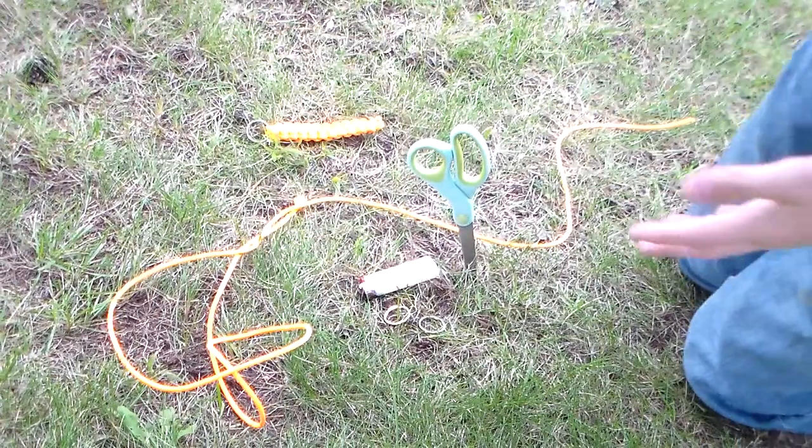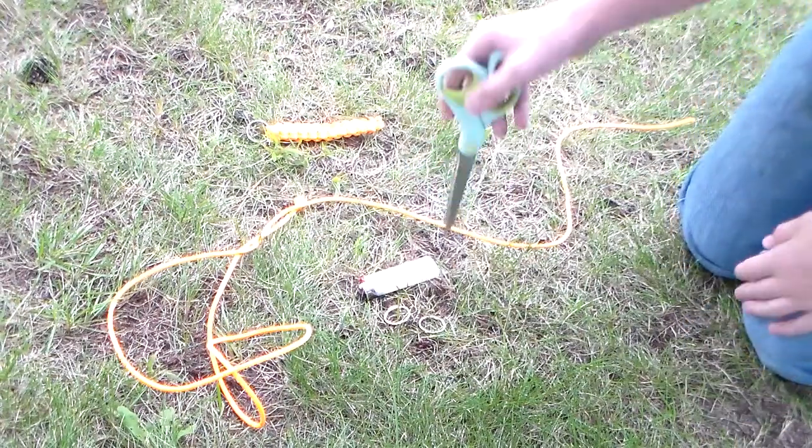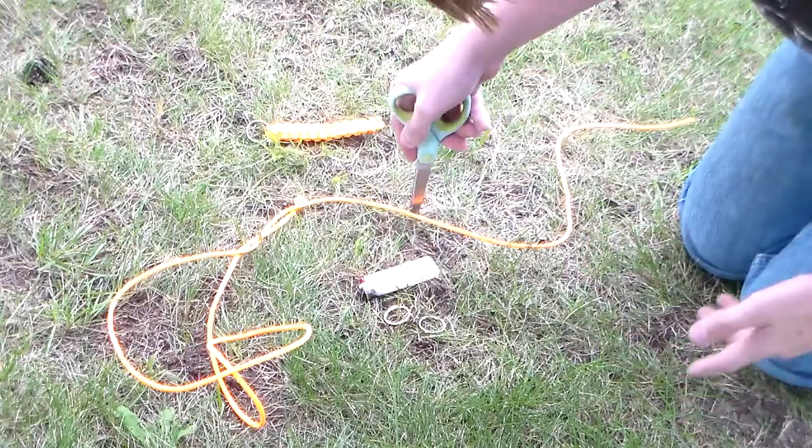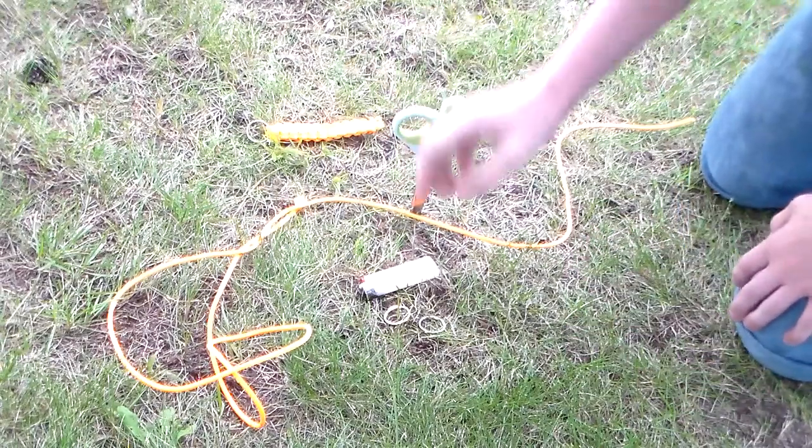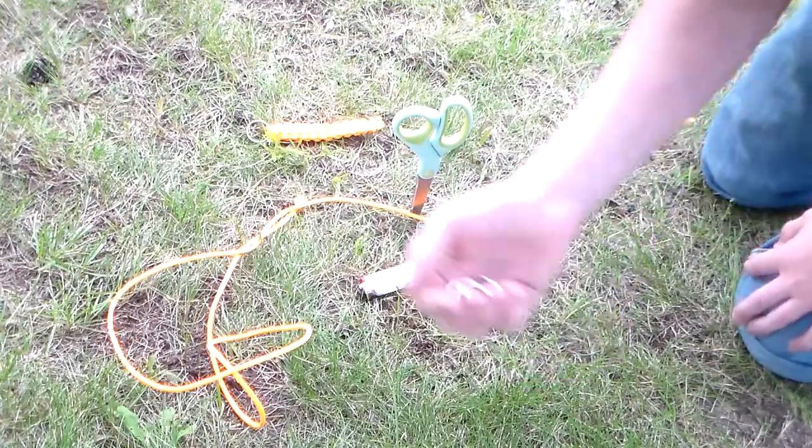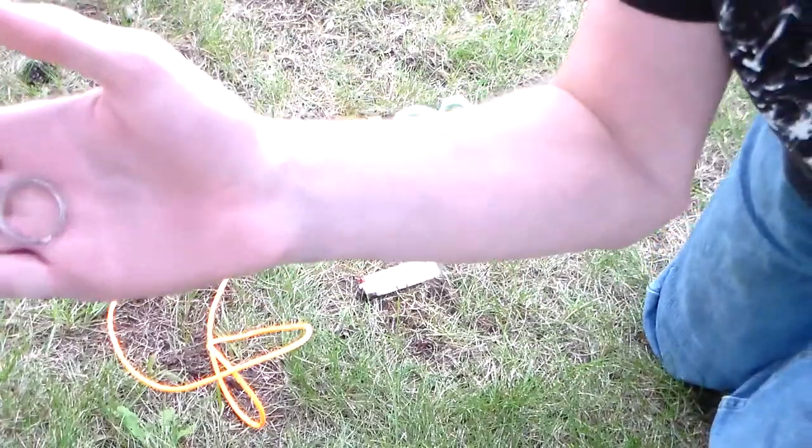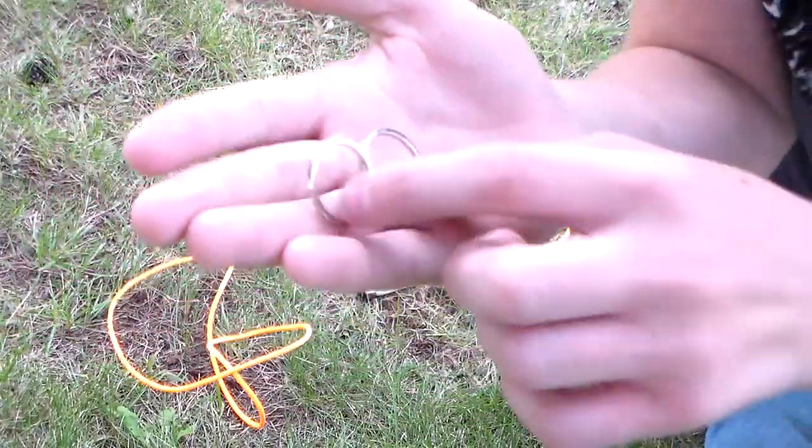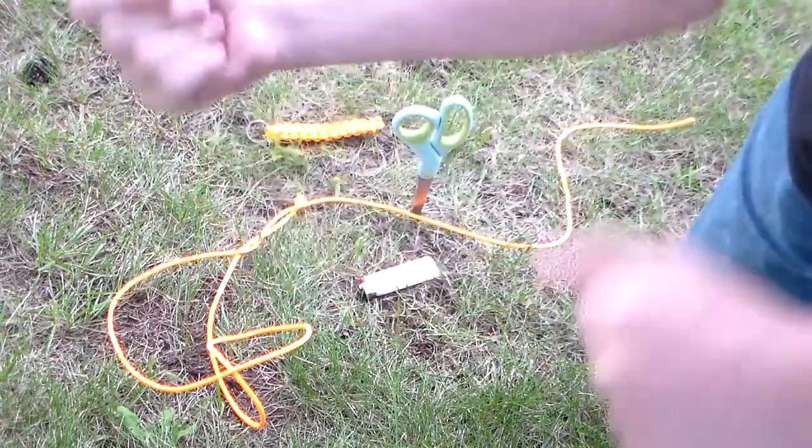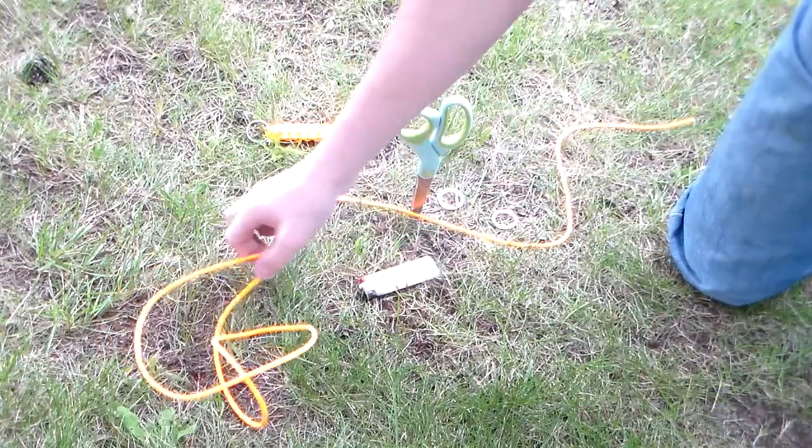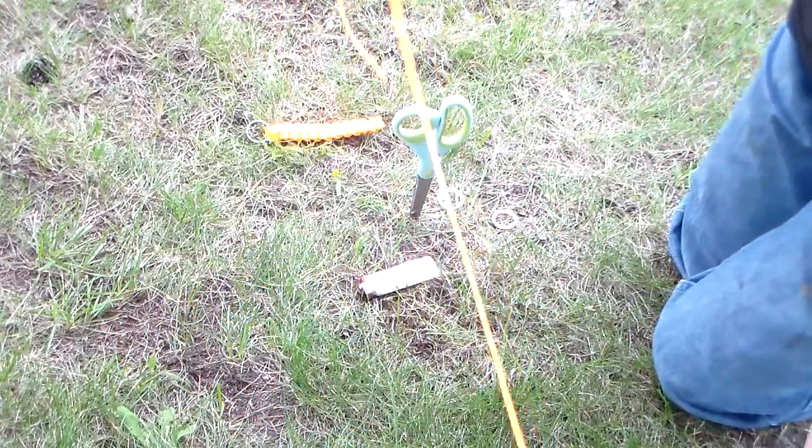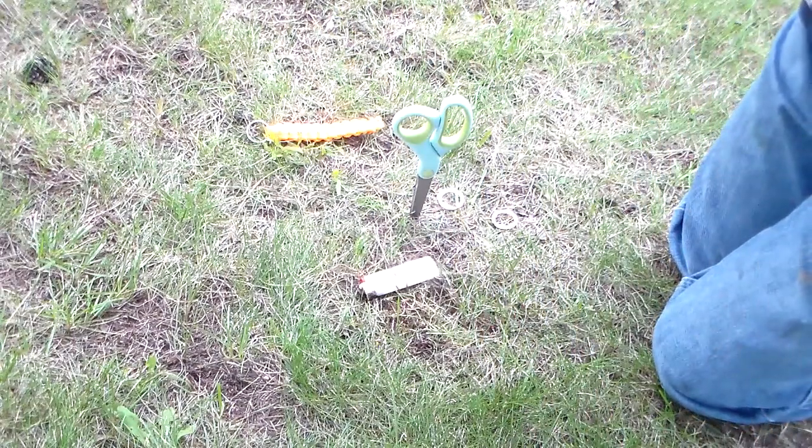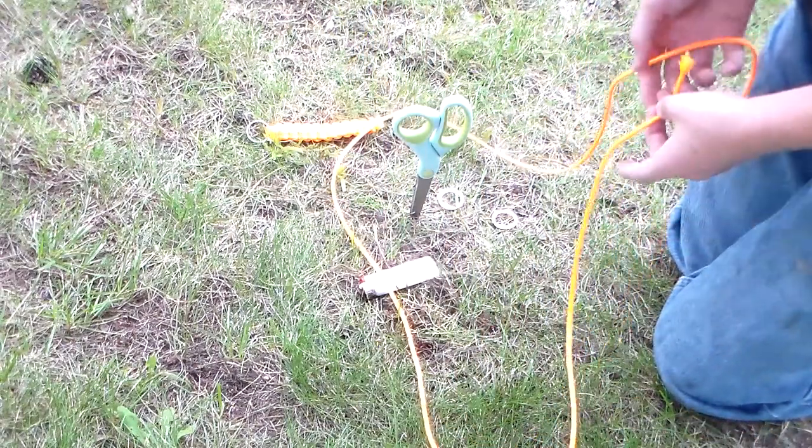So what we will need to make our paracord keychain is just some scissors here or a knife, whichever is sharper or works better, two key rings, I don't know how big they are, they're just usual key rings here. And let's say about four feet, four or five feet of paracord, probably about five feet.